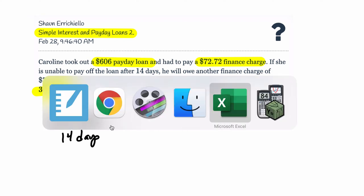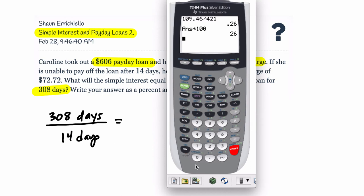So let's calculate that. Get my calculator. So 308 divided by 14. So 22 pay periods.